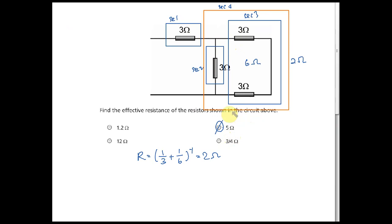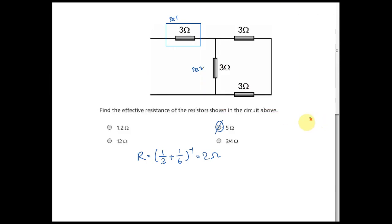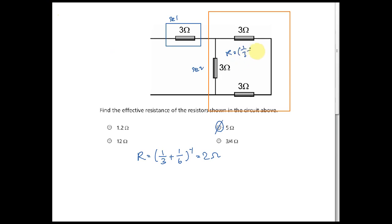Some sharp students may immediately see that the two series resistors give 6 ohm and combine with the 3 ohm in parallel: (1/3 + 1/6) reciprocal = 2 ohm — treating it as one large section rather than three. Either approach is valid.